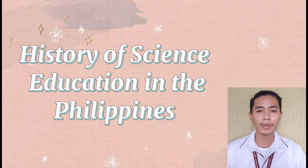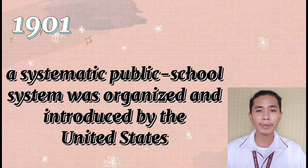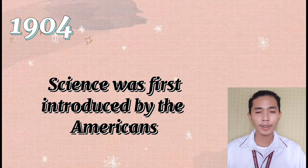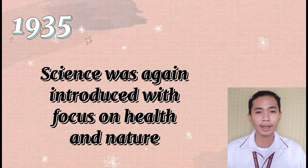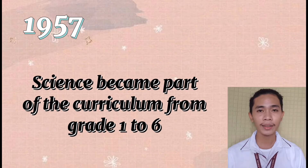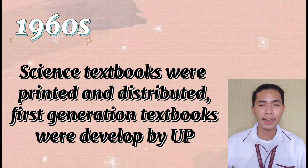History of science education in the Philippines: In 1901, a systematic public school system was organized and introduced by the United States. In 1904, science was first introduced by the Americans under the subject matter Nature Study, but abolished a year after to give more time to language arts. In 1935, science was again introduced with focus on health and nature. In the 1950s, the importance of science for development was recognized by leading scientists. In 1957, science became part of the curriculum from grade 1 to 6. In the 1960s, science textbooks were printed and distributed by the United States.